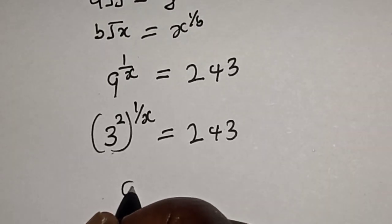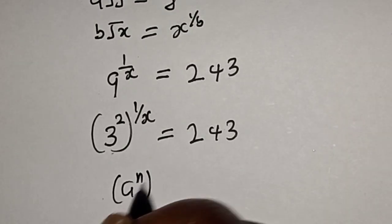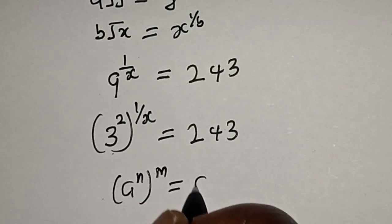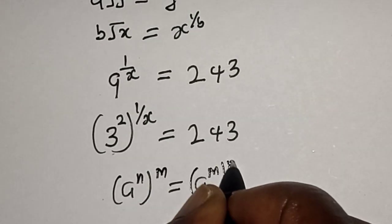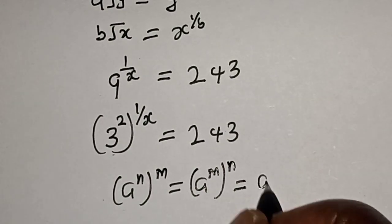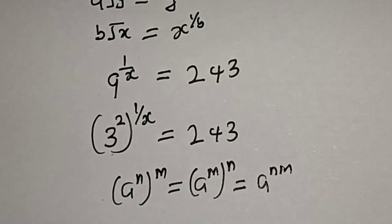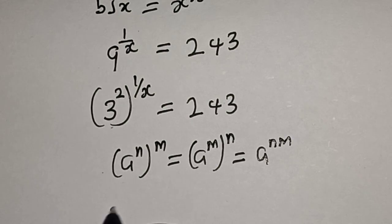Of this exponential rule: a raised to power n, raised to power m, equals a raised to power m raised to power n, which equals a raised to power nm.